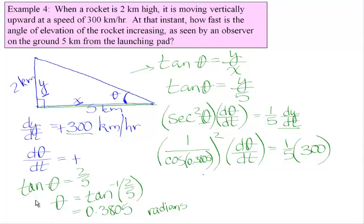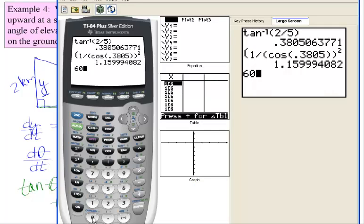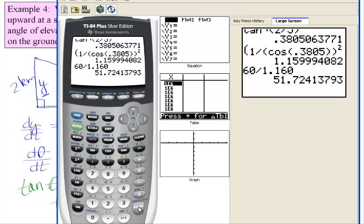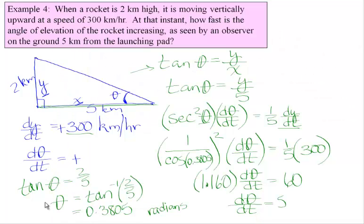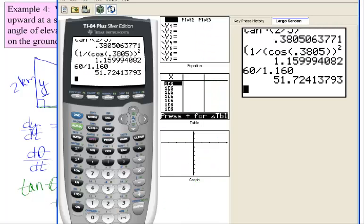Multiply that times dθ/dt. That's going to have to equal 60. Solve for dθ/dt, which is 60 divided by. Bring my calculator back up. So we have 60 divided by 1.160. 51.7241. So there we are.